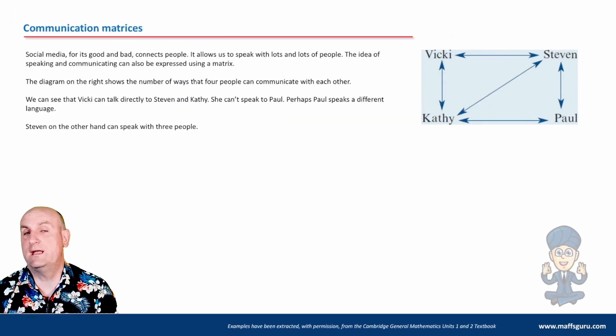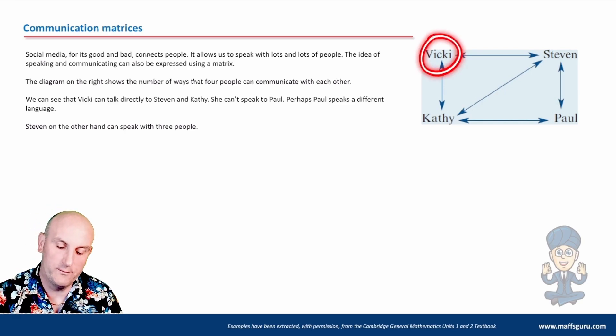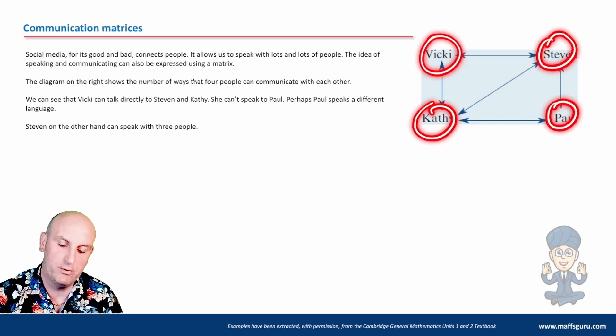Now, there are communication matrices as well. So not just networks. We can communicate to people. And here we've got an example. I've got four people. We've got Vicky, Kathy, Stephen, and Paul.